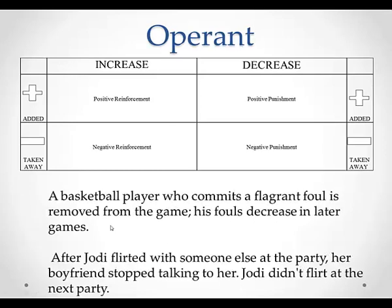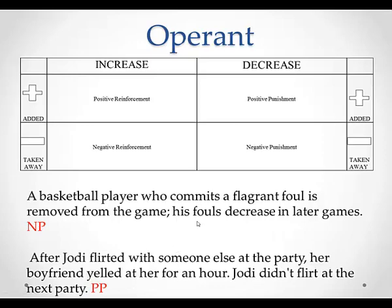A basketball player who commits a flagrant foul is removed from the game, and his fouls decrease. After Jody flirted with someone else at the party, her boyfriend yelled at her, and Jody didn't flirt at all at the next party. The basketball player example is negative punishment because he is removed from the game — something is taken away — and he's going to stop doing it. Jody's situation is positive punishment: the behavior of flirting will decrease, and the thing being added is being yelled at.